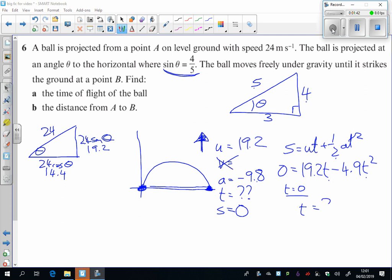The one we want is the other one, which is t equals 3.918, or 3.9 seconds to two significant figures.